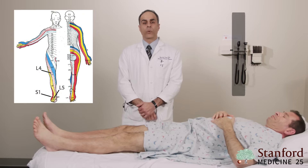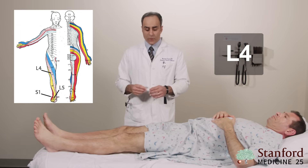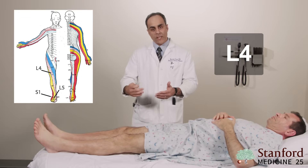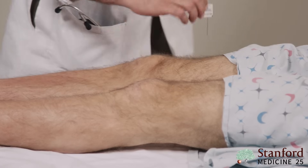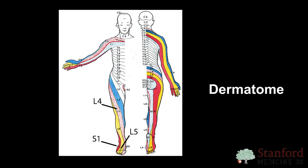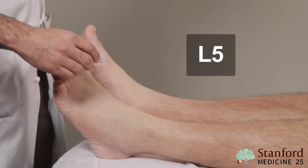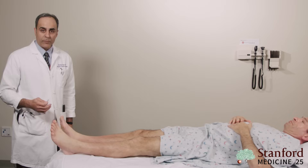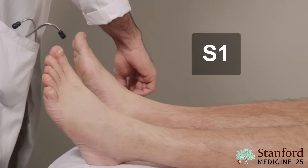Next, we're going to be moving to the sensory portion of the exam, focusing on L4, L5, and S1. We will take a monofilament or pin and try to distinguish if there's any numbness on one side compared to the other. In the case of L4, we're going to be focusing on the anterior lateral aspect of the thigh, looking for any discrepancy in the dermatomes. Moving to L5, the space between the first and second toe — again looking for any discrepancy. And finally, ending with S1, which is the lateral aspect of the foot.